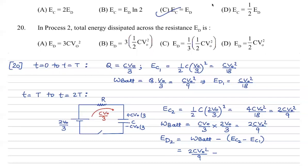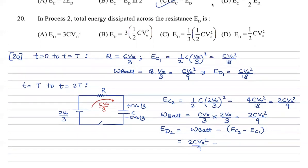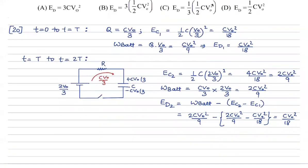We need to subtract E_C1 from E_C2. Writing out the full value: 2CV_not squared by 9 minus CV_not squared by 18 leaves CV_not squared by 18 as the energy dissipated in the second step. Similarly, we proceed to the third step from 2T to the long time limit, meaning until the capacitor is fully charged.